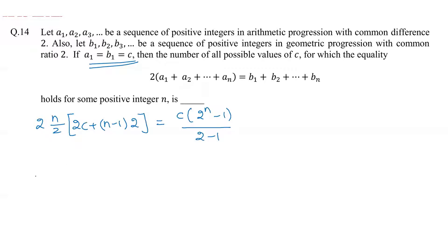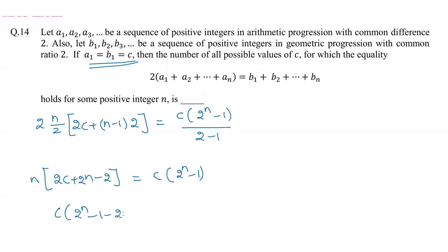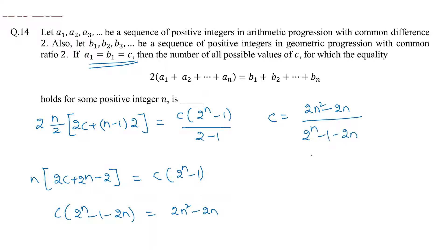After cancelling the 2s, we are left with n × (2c + 2n − 2) = c × (2^n − 1). Grouping terms containing c on one side gives: c × (2^n − 1 − 2n) = 2n² − 2n. So c = (2n² − 2n) / (2^n − 2n − 1).